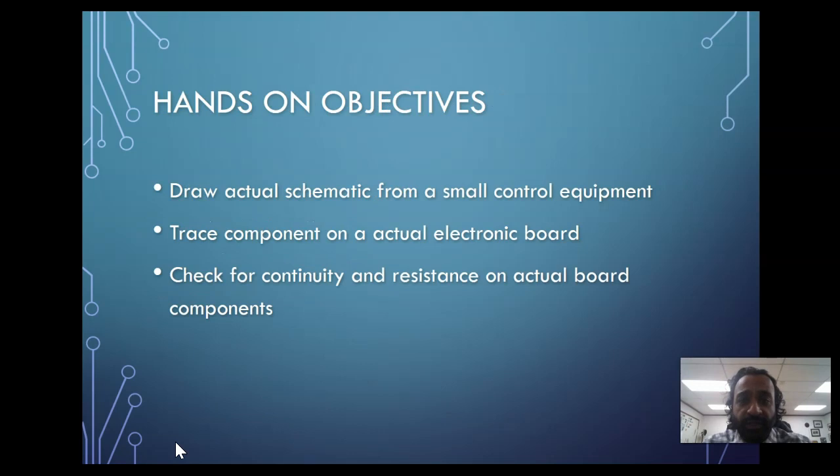For the hands-on objective, I'll give you an aquastat with all the components—very old-fashioned so you can see the components and how they function. I will trace the components, and by doing so we will trace how it works and how it's wired. Hopefully that will help you understand how schematics are drawn and what's happening on paper. It's a big transition to translate what's on paper into actual equipment. We'll also test that equipment for continuity and resistance on actual components.